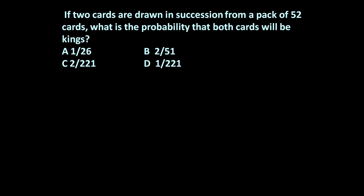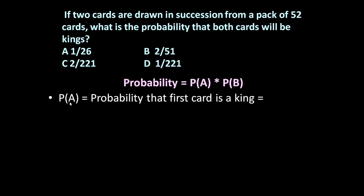The probability is given by PA — probability that the first card is a king — multiplied by PB — probability that the second card is also a king. PA is calculated as favorable events upon total events. In a pack of 52 cards there are 4 kings, so PA = 4/52, which equals 1/13.